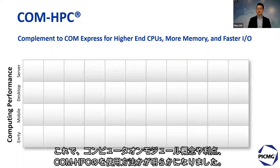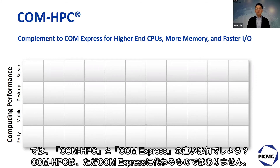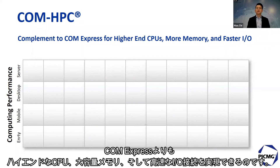Now we understand the benefit of the computer module concept and how ComHPC uses it. But how is ComHPC different from the current existing COM-HPC Express? Simply speaking, ComHPC is not a replacement to COM-HPC Express. Instead, it's a complement to COM-HPC Express for higher-end CPU, more memory, and faster I/O.